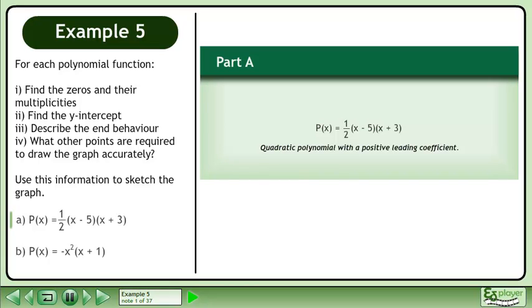In part a, we have p of x equals one-half times (x minus 5) times (x plus 3), a quadratic polynomial with a positive leading coefficient.